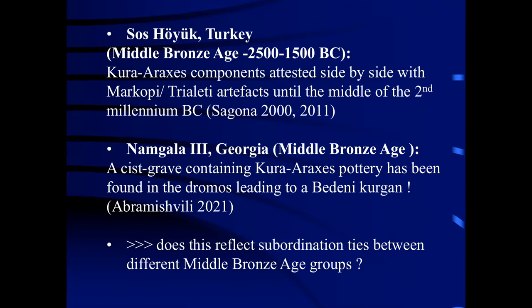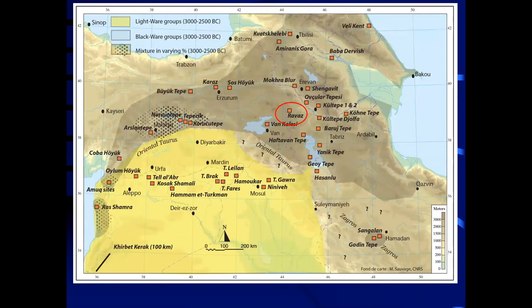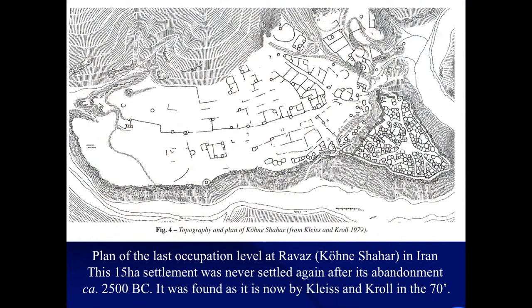If we now look at Travat, the situation is quite different. We are faced with a huge settlement that is almost 15 hectares. This settlement was abandoned roughly at the middle of the third millennium in Iran. It was found by Klaas and Kroen in the 1970s, and the actual plan they mapped more or less corresponds to the settlement as it was abandoned. So after it was abandoned, the settlement just remained as it were — we are clearly faced with a case of a clear break.